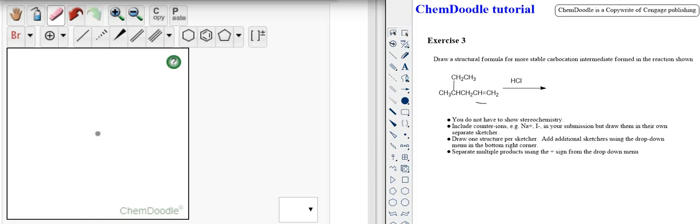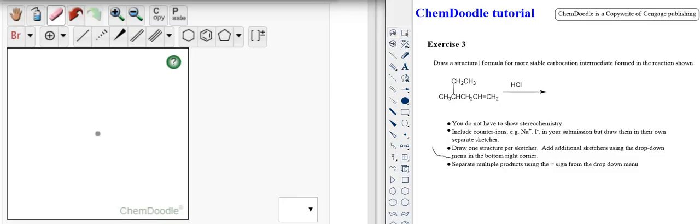So I just want to draw the carbocation right here because that's the more stable one. We're going to be drawing the chloride ion in a separate window. We're going to have five in a row with an ethyl off of the second last one or you can think of a methyl off of the third last one. Regardless, let's draw what we have.